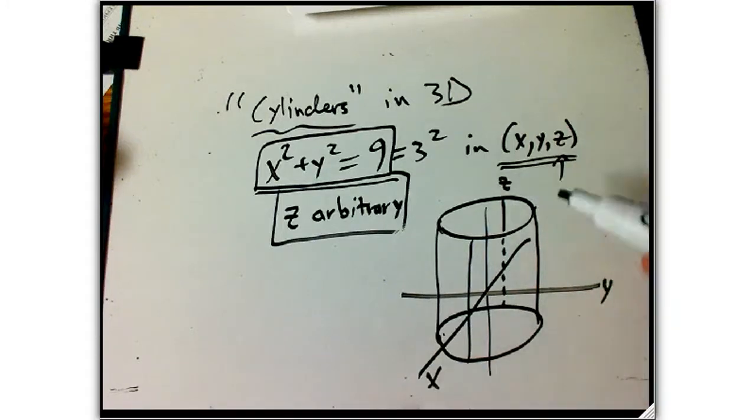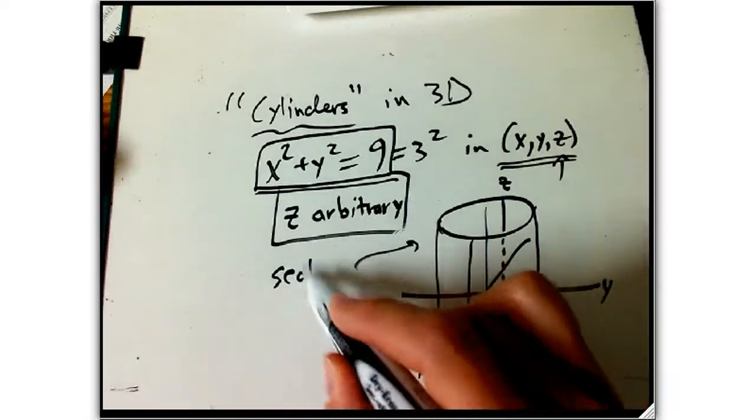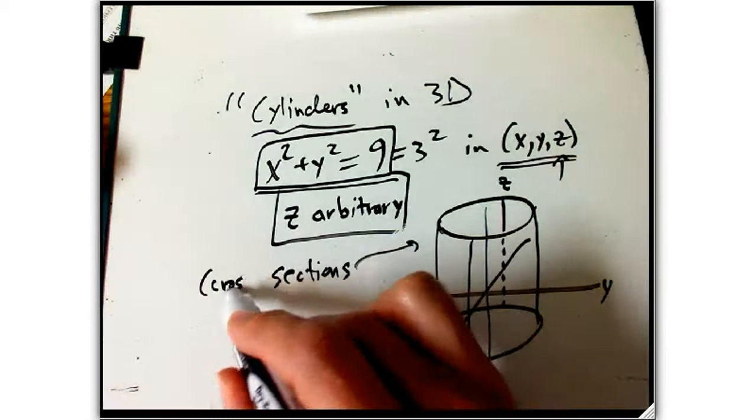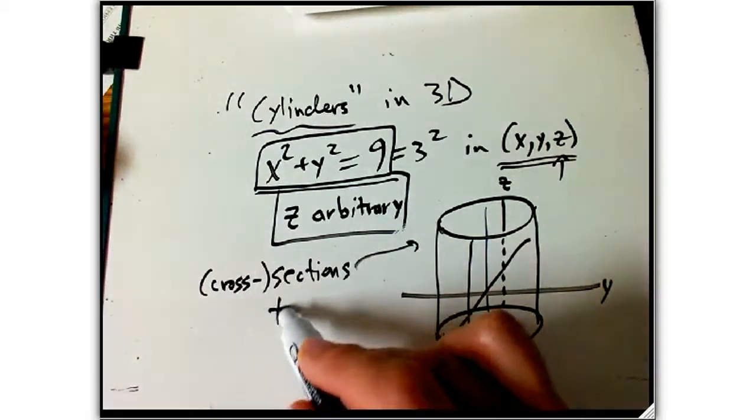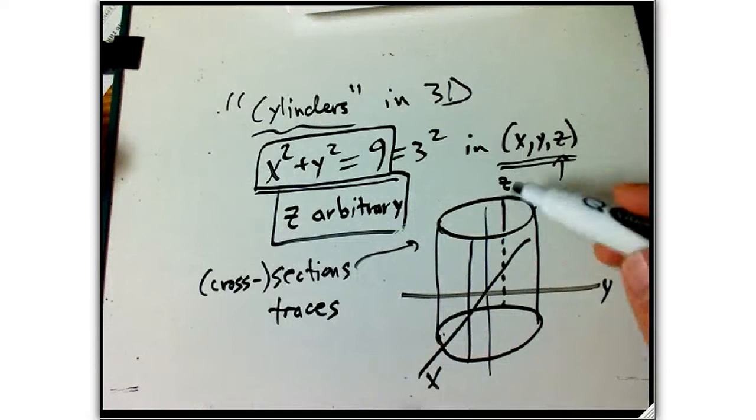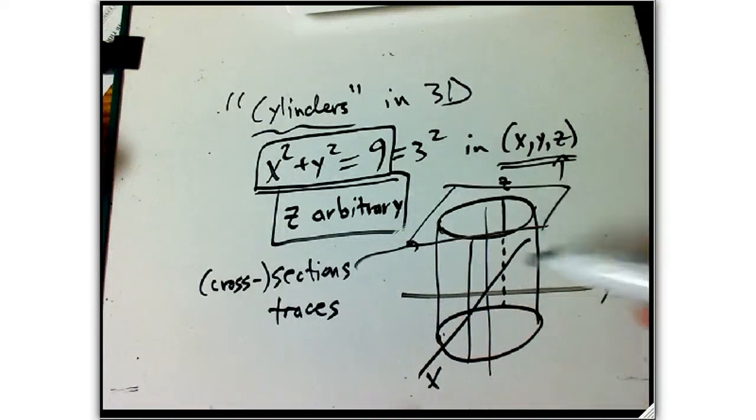Now what we've done here is a very general thing. These guys are called sections, or cross-sections, or traces, depending on who's talking about them. And they're what you get when you take any surface and you intersect it with one of the coordinate planes, or a plane that's parallel to a coordinate plane.